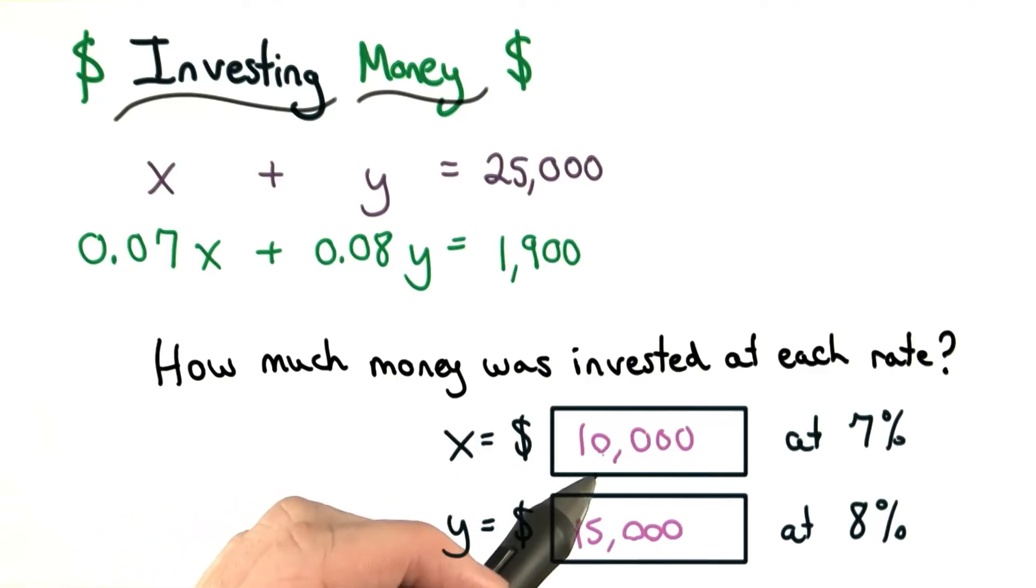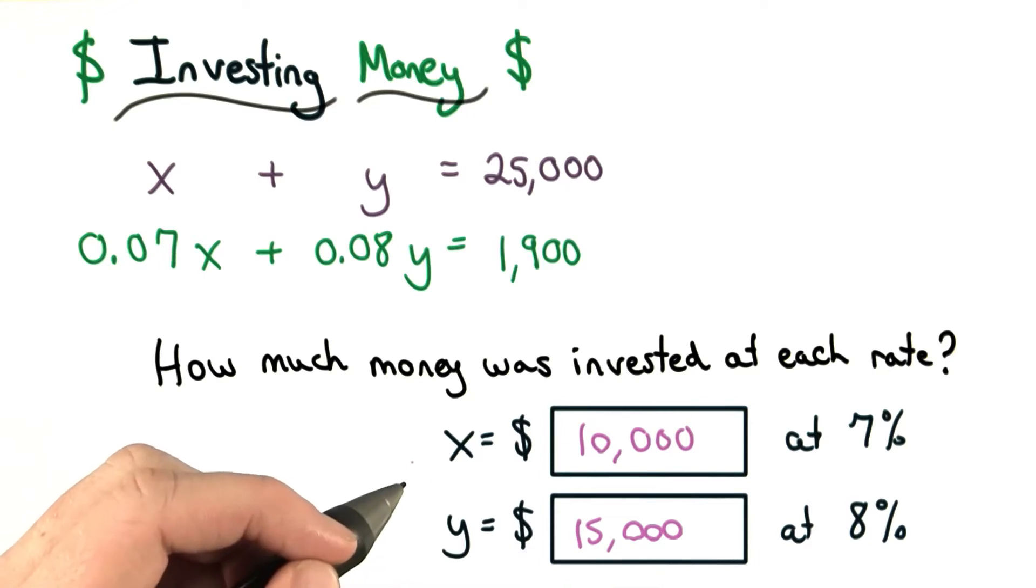After solving, we find that x is $10,000 and y is $15,000. Congrats if you got both of these right.